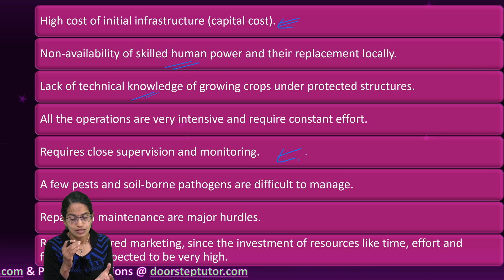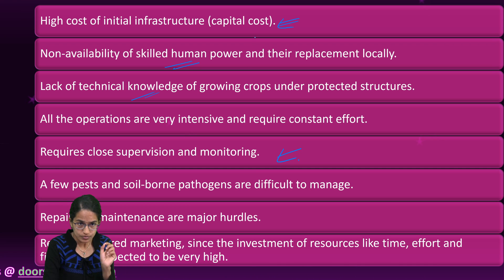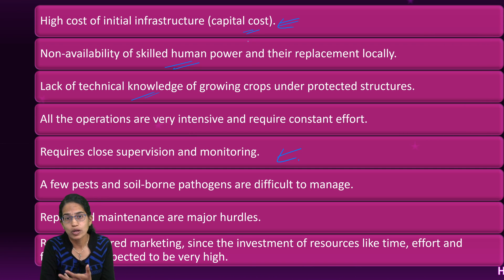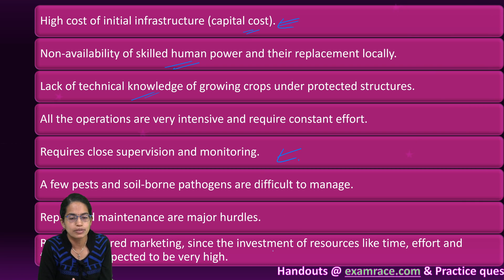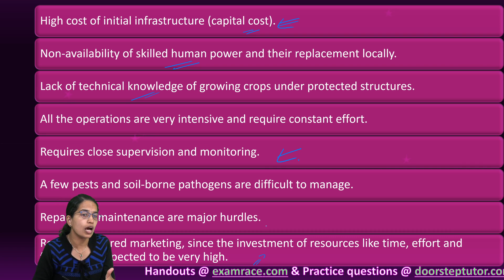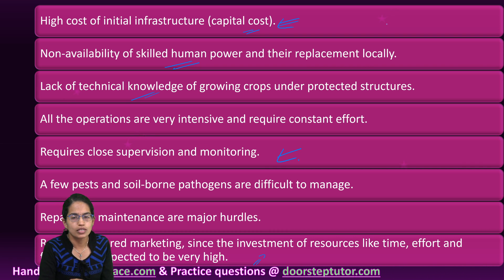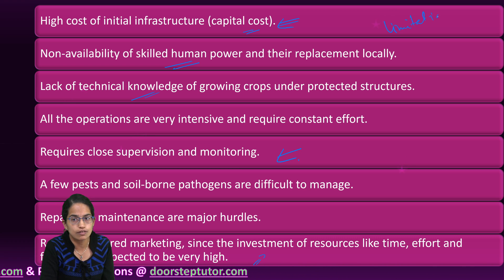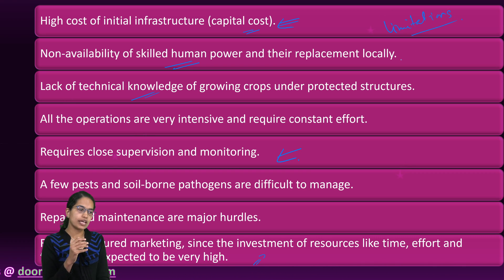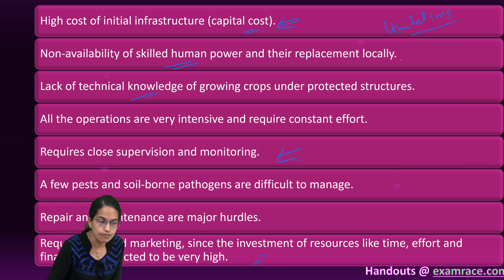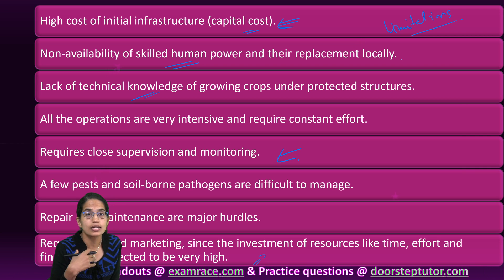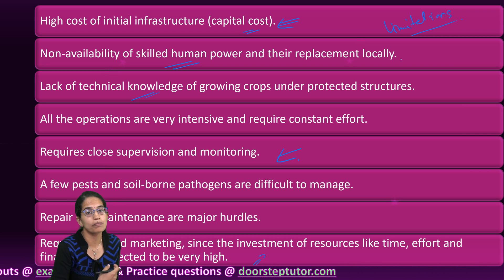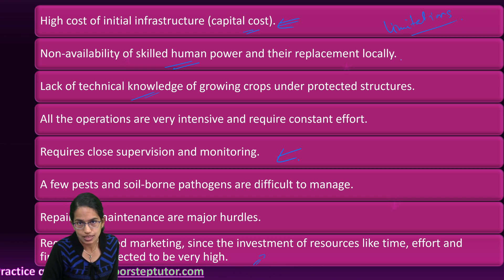There is also the question of marketing — since capital cost is high, marketing is required to ensure produce is sold at a reasonable price so that farmers can actually benefit. Those are some of the limitations associated with protected cultivation, but numerous countries have progressed well with it. If our farmers are given skill and technical training along the lines of protected cultivation, this could be the next generation revolution in agriculture in India.